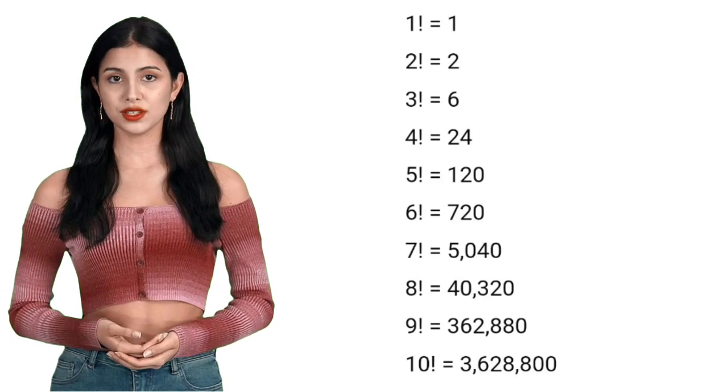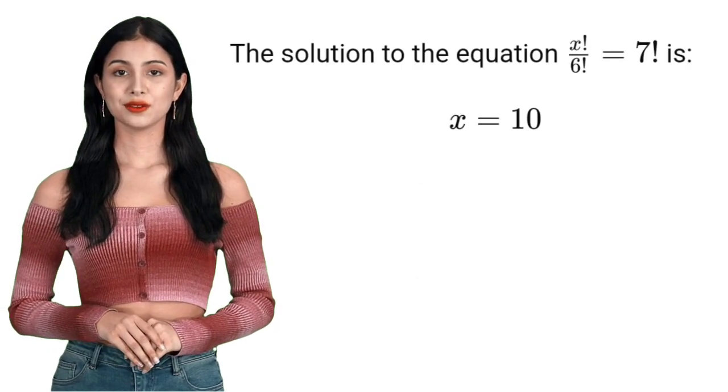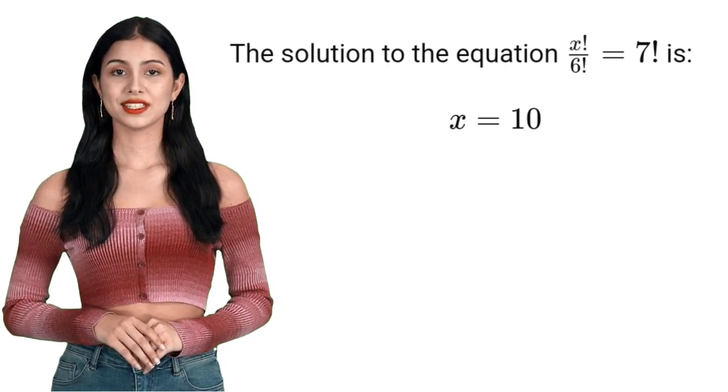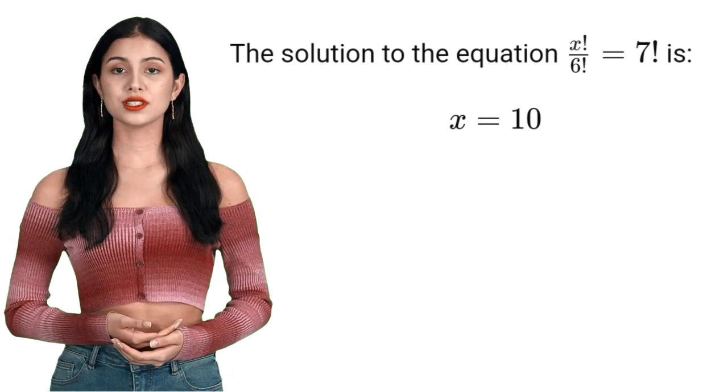We've found that 10 factorial equals 3,628,800. So, the solution to the equation x factorial divided by 6 factorial equals 7 factorial is x equals 10.